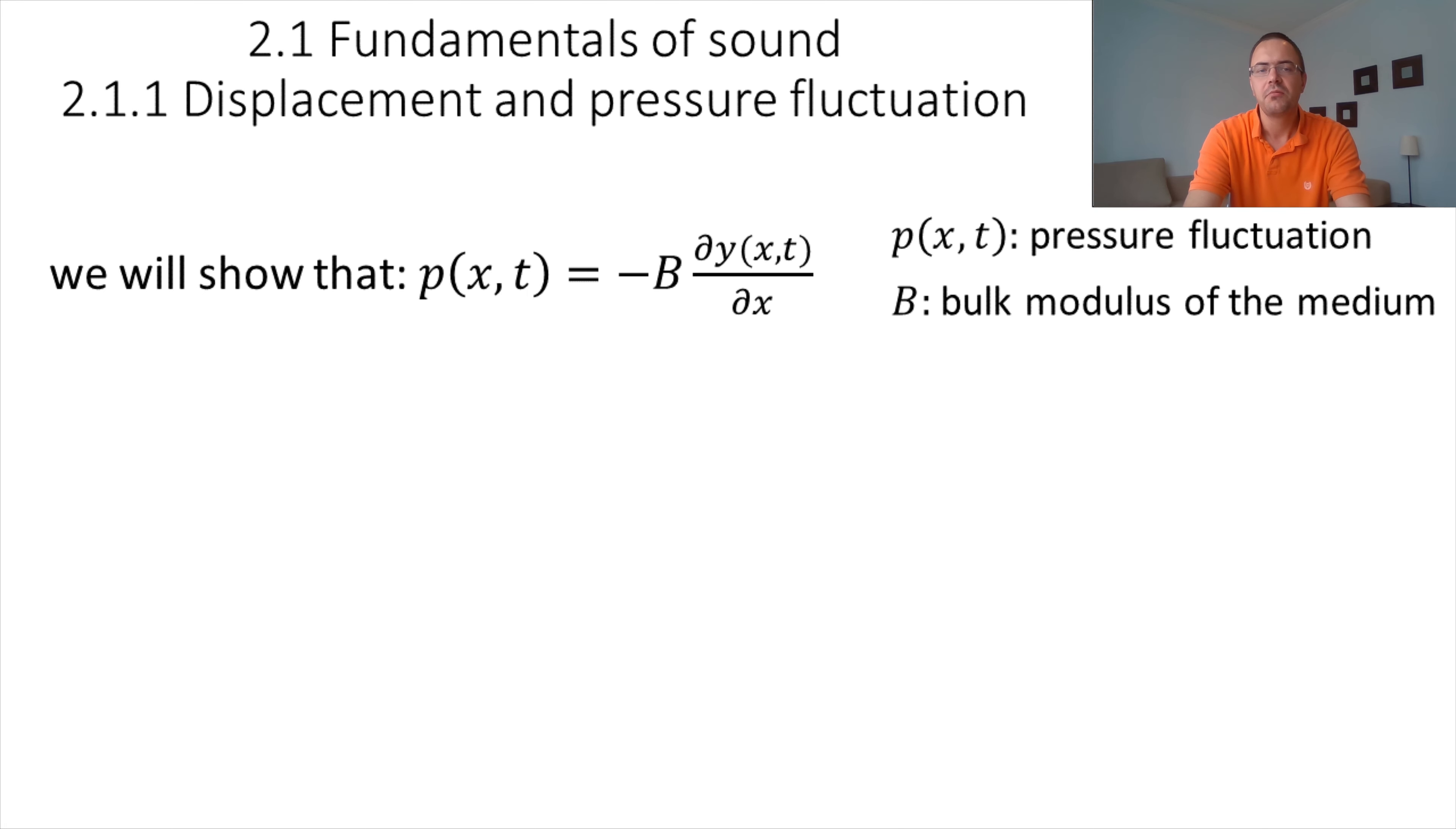Now, in this video, we will show that the pressure fluctuation is related to the particle displacement by this relation: p equals minus B dy/dx, where p is the pressure fluctuation, B is the bulk modulus of the medium, and Y represents the displacement of the particles. Now, to derive this relation, let's consider a volume of the medium contained between the position x and x plus dx. This volume is equal to the product of the section of the tube, S, multiplied by the length delta x. So V equals S times delta x.